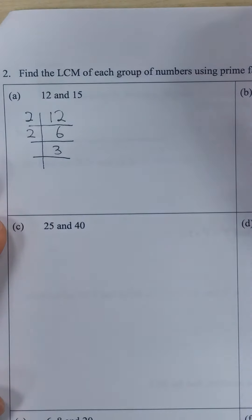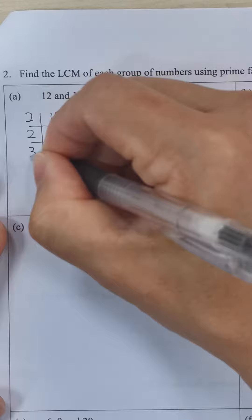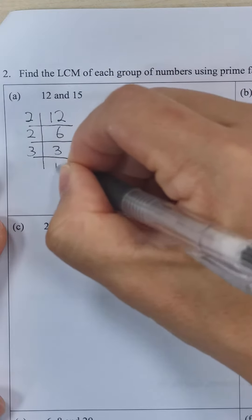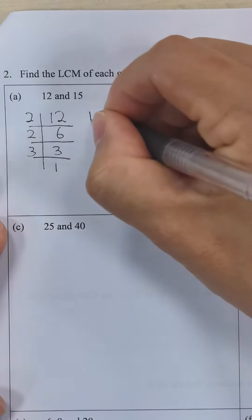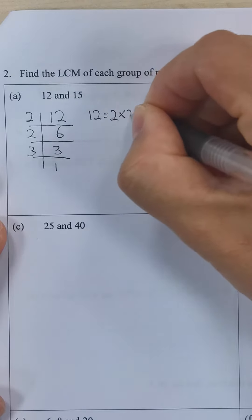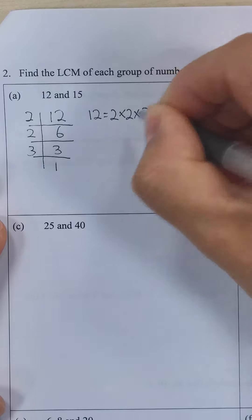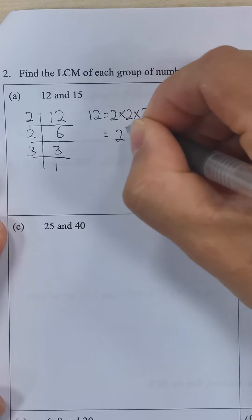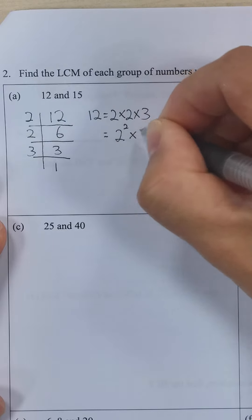3 can divide by 3, we're left with 1. So 12 can be written as 2 times 2 times 3. We make it into index notation: 2 to the power of 2 times 3.